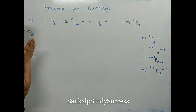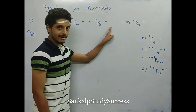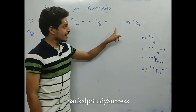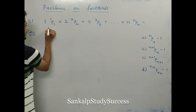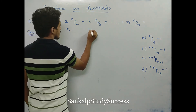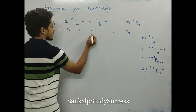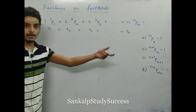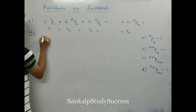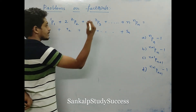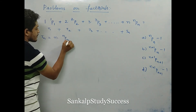We need to find this summation value with 4 options. We have to manipulate the nth term. The nth term is n into nPn. We already know that nPn equals n factorial. So the nth term is n into n factorial.